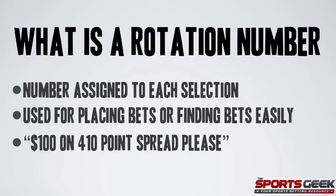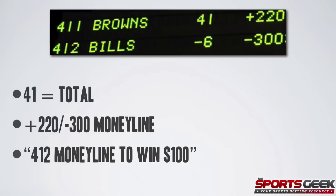So what is a rotation number? These are numbers assigned to each selection. Basically they're used for placing bets at the betting window or to help bettors find their bets more easily. At the betting window, an example of what you would say is '$100 on 410 point spread please.' They'll be able to find that a lot easier than if you said '$100 on the Giants' — it just makes their job easier and makes things go quicker.